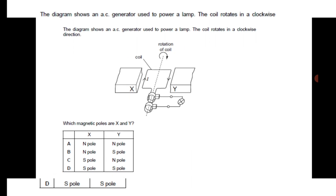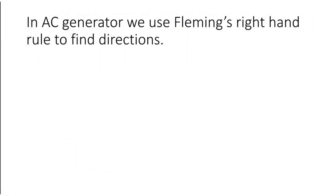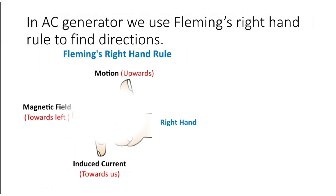The next question: the diagram shows an AC generator used to power a lamp. The coil rotates in a clockwise direction. The question is: which magnetic poles are X and Y? In an AC generator we use Fleming's right hand rule to find directions.